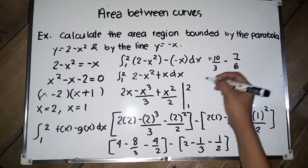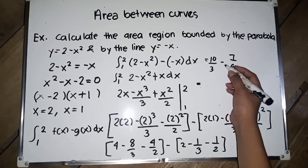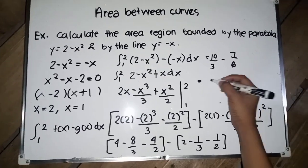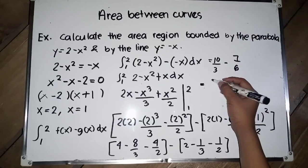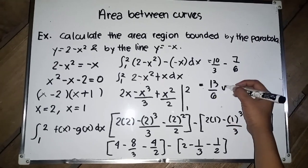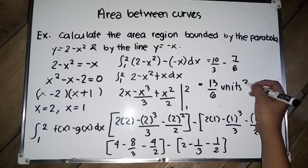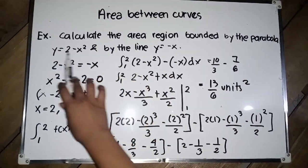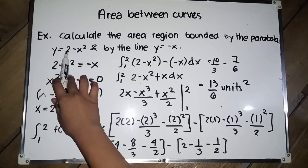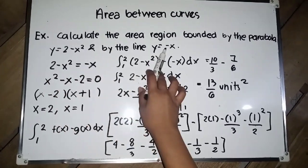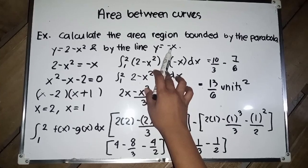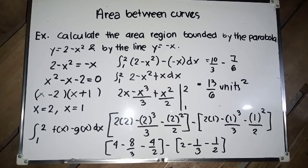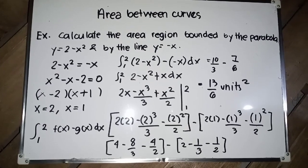Therefore, the area bounded by y = 2 minus x squared and the line y = negative x is equal to 13/6 unit squared. Thank you for watching and God bless.